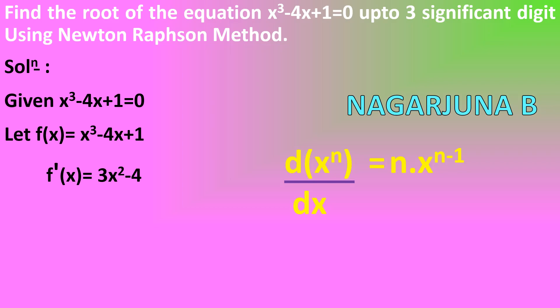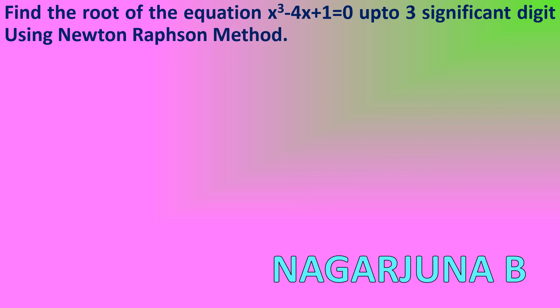The initial guess has not been given, so x₀ is not given — we need to find it. We find the nearest value by substituting x = 0, 1, 2, 3, −1, −2, −3, and so on. Taking x = 1: f(1) = 1³ − 4(1) + 1 = −2. It is far from 0.